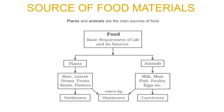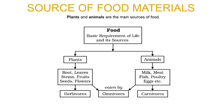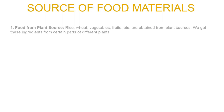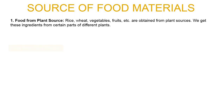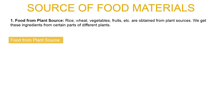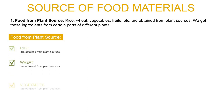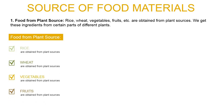The two main sources of food are plants and animals. Our first source is the plant source — the food which we get from plants. Rice, wheat, vegetables, fruits, etc. are obtained from plant sources.